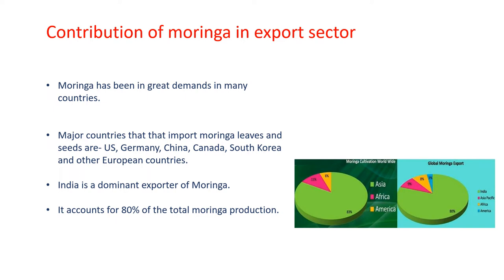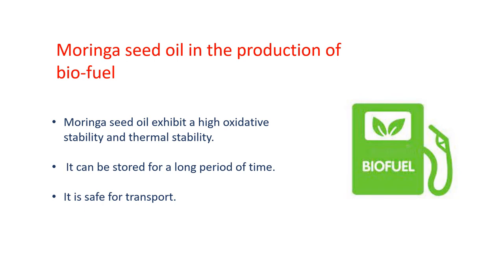Moringa is in high demand in other countries. Now let's see how Moringa seed oil is useful in the production of biofuel. Moringa seed oil has favorable characteristics for its use as biofuel because it exhibits high oxidative stability, and its thermal stability exceeds that of other oil crops like sunflower oil and soybean oil. That is the reason it can be used as biofuel.